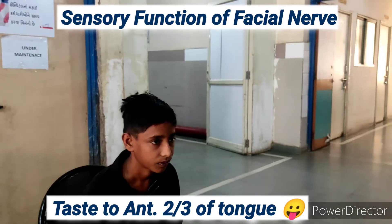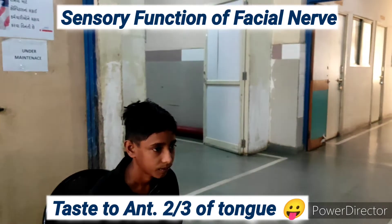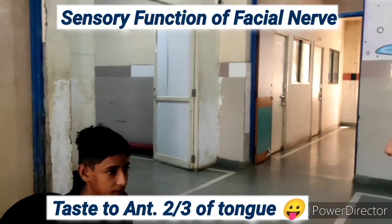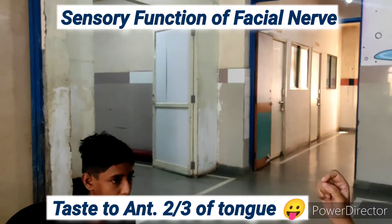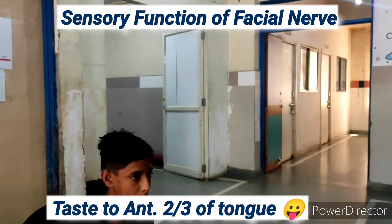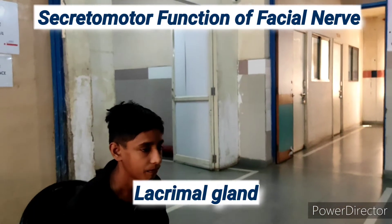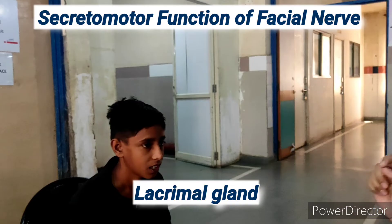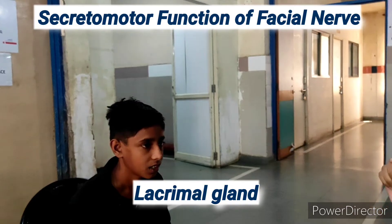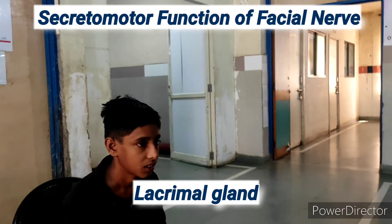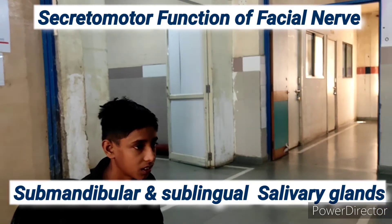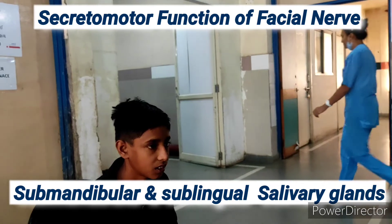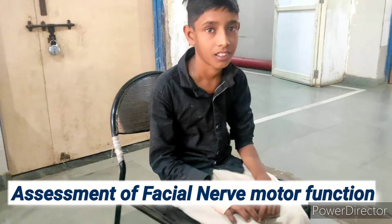Its sensory function is mainly taste sensation to the anterior two-thirds of the tongue via its branch chorda tympani. Its secretomotor function goes to the lacrimal gland via the greater superficial petrosal nerve branch, and to the salivary gland via the chorda tympani branch.